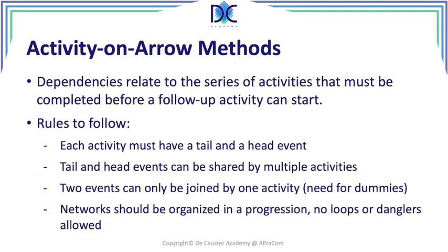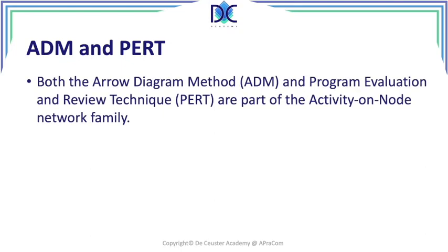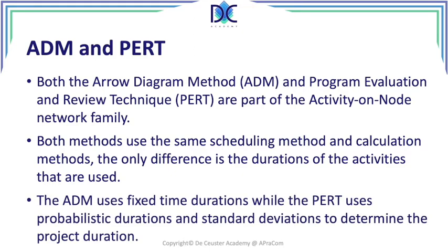Both the arrow diagramming method and PERT are part of the activity on arrow network family. Both methods use the same scheduling technique and calculation method. The only difference between the two is the duration of the activities used: the arrow diagramming method uses fixed time durations, while PERT uses a probabilistic approach to durations, including the expected duration and a standard deviation for each activity, and finally for the project, to determine the overall project duration.